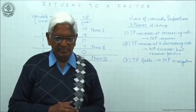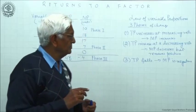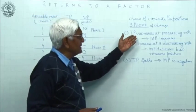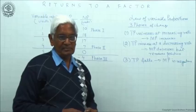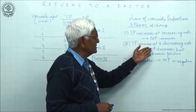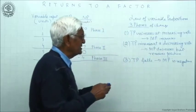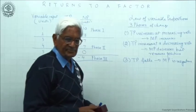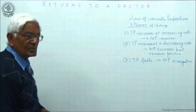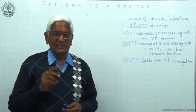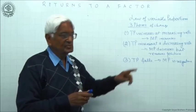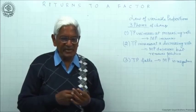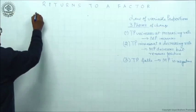But before we come to the diagram, I will like to point out the reasons behind these phases. Reasons means: why is it that TP increases at increasing rate? Why not at the same rate? Why should TP fall and why should not TP continue to increase? What are the reasons? So if you get a question in the exam, explain the law. Now you have to state the phases and at the same time give reasons behind each phase. So we take reasons.